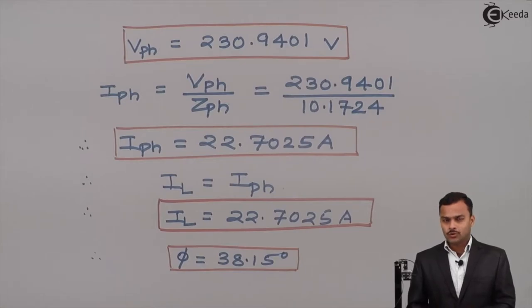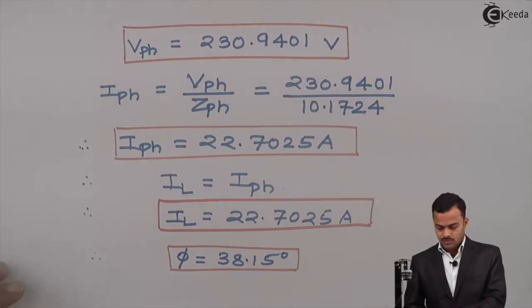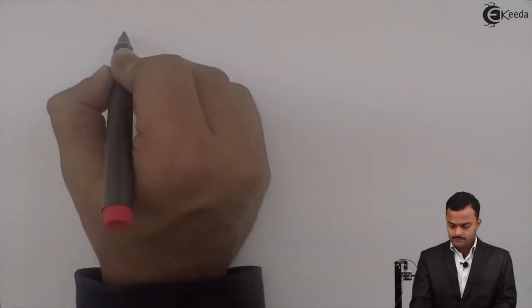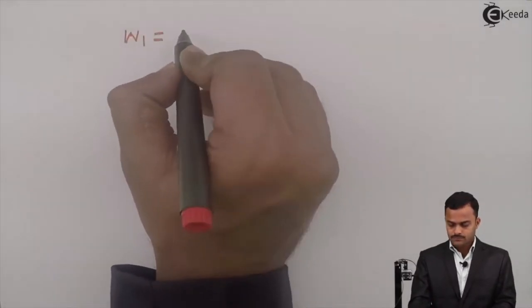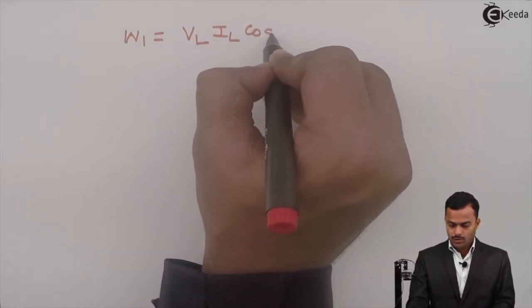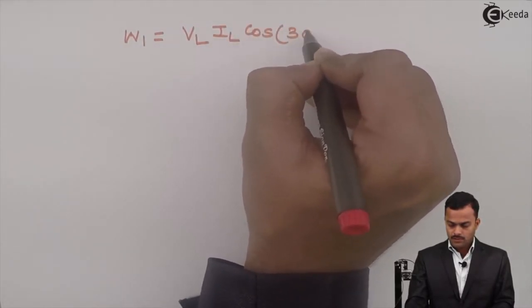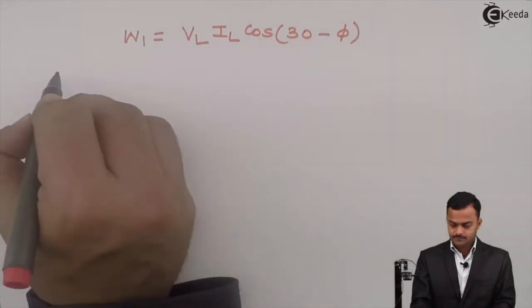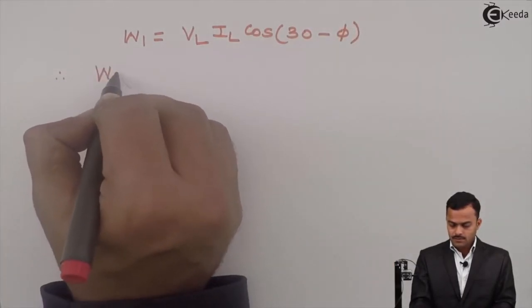Now all values are known to use the formula for W1 and W2. It's an inductive circuit because they have given three similar coils. For an inductive circuit, W1 equals VL times IL times cos(30 minus phi).